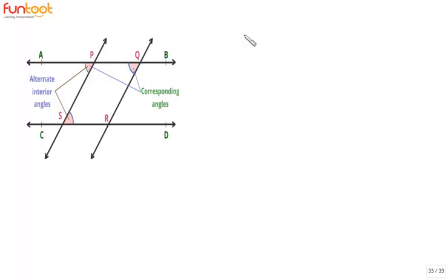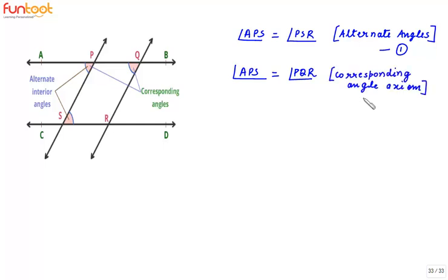So we can write that angle APS is equal to angle PSR because these are alternate angles, and we can call this as one. Also, angle APS is equal to angle PQR. Therefore, angle PSR is equal to angle PQR, and this is what we have to prove in this proof.